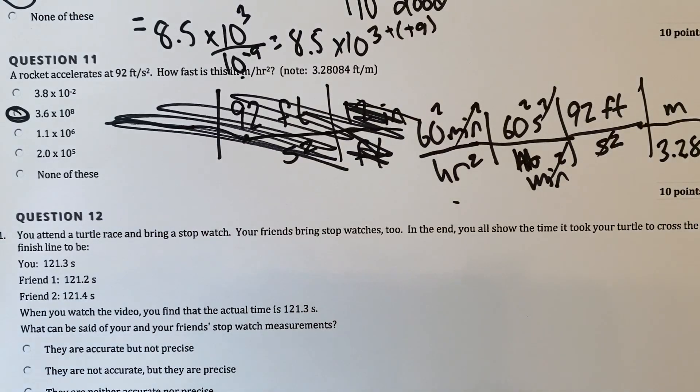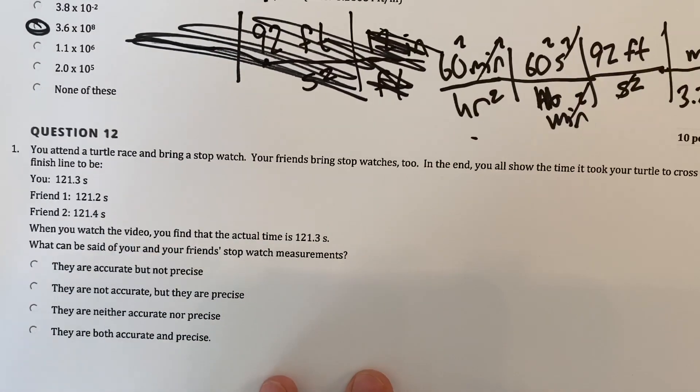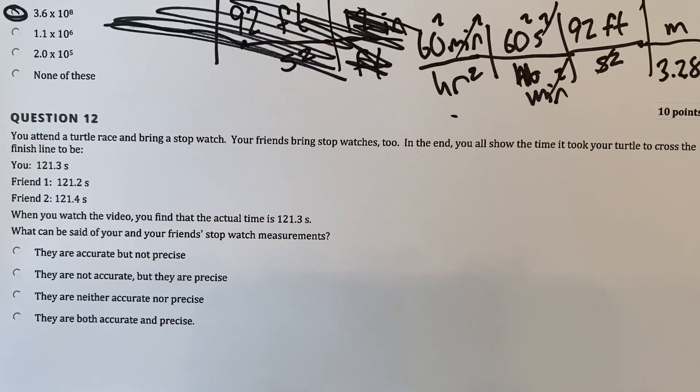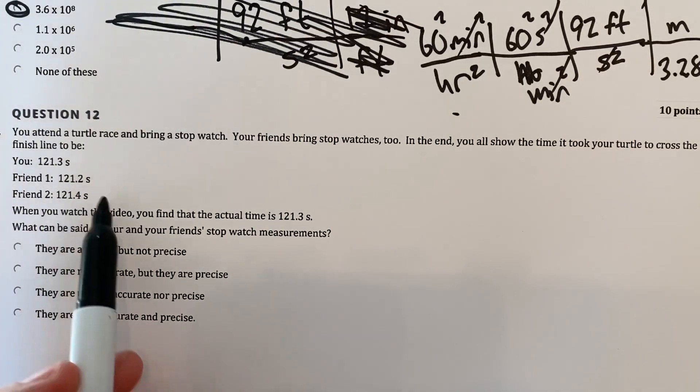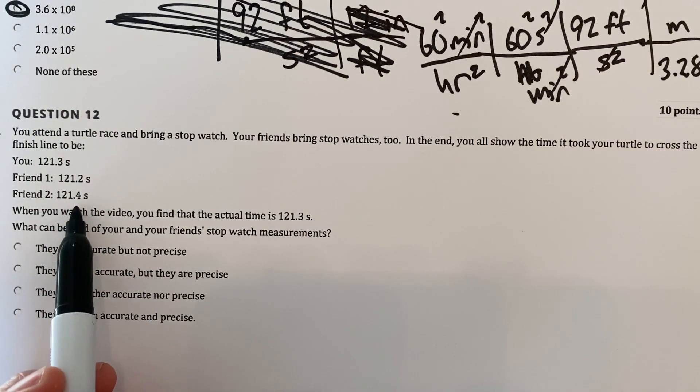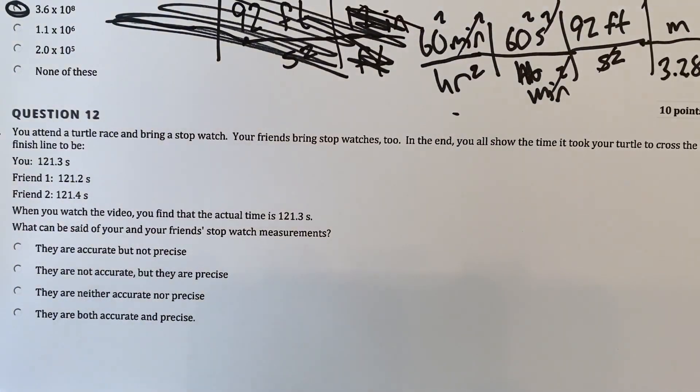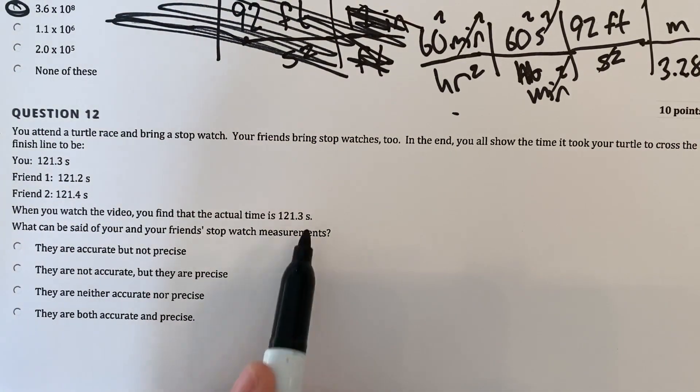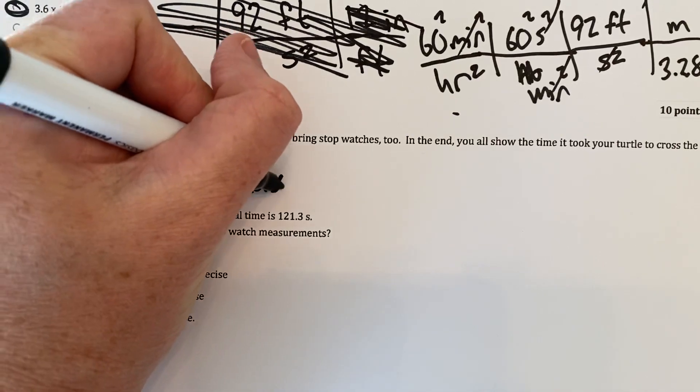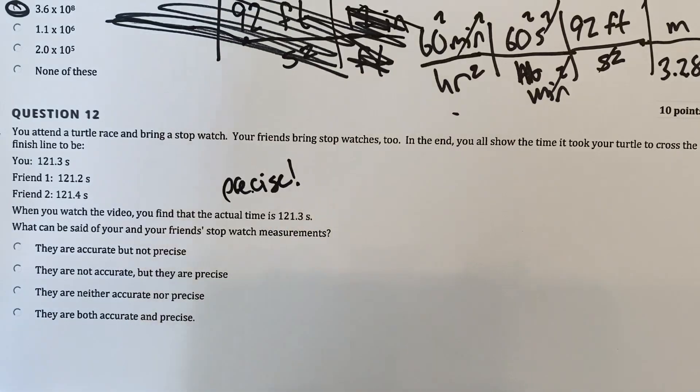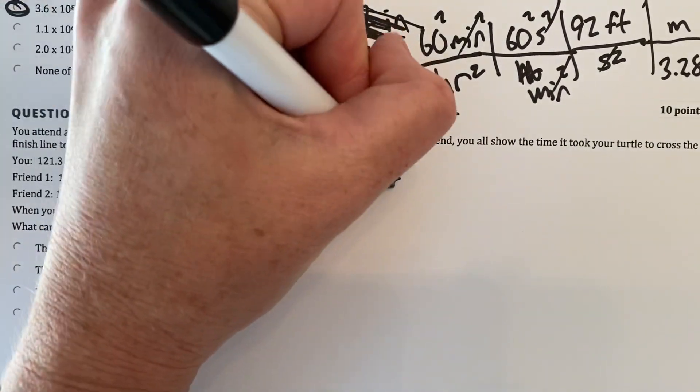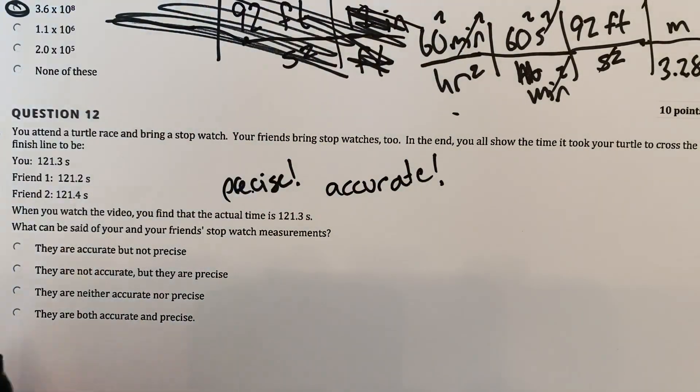Alright. Number 12. You attend a turtle race and you bring a stopwatch. Your friends bring stopwatches too. In the end, you all show the time it took your turtle across the finish line. It's pretty much exactly like the practice problem or practice exam. It says you had a time of 121.3. Friend number one is 121.2. Friend number two is 121.4. So you guys were all kind of around the same time. You're just off by a little bit. So then you watch it and you find out, hey, you were right. Good job, you. 121.3. What can be said of you and your friends' stopwatch measurements? So you and your friends, it would appear, all had very similar things. That means they were precise. But also, if you average them out, they all average out to the exact same actual time. So they were also accurate. Go, you and your friends. They're both accurate and precise.